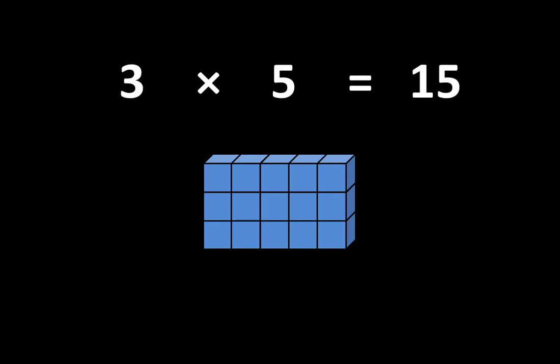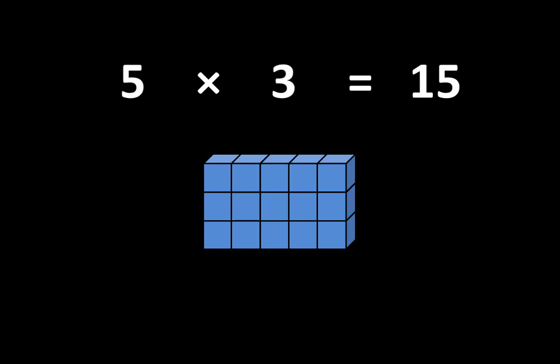Here's a picture of 15. This is one group of 15. I can break the 15 apart into 3 groups of 5 and it's still equal to 15. I can put it back together and I can also break it apart into 5 groups of 3 and it's still equal to 15. So I can write 3 times 5 is equal to 15, and I can also write that 5 times 3 is equal to 15.